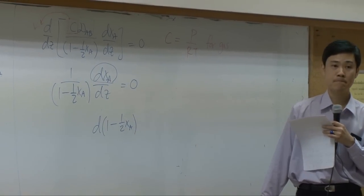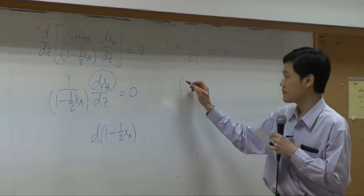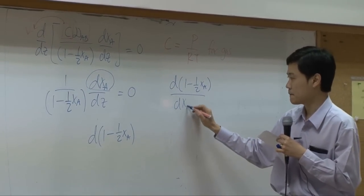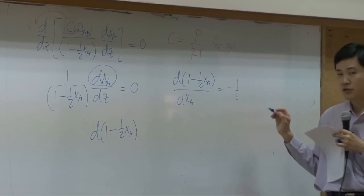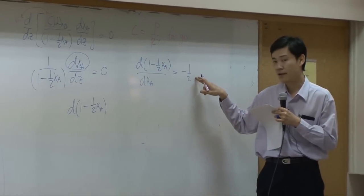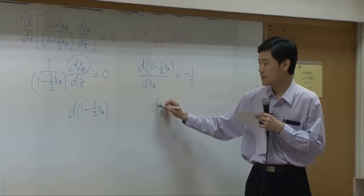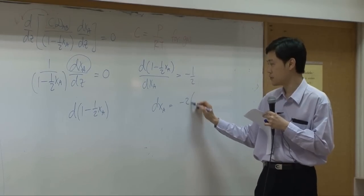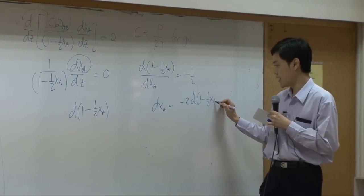You just take d of 1 minus half X_A by dX_A. Okay? Differentiation of this, you get 1 over 2 minus 1 half. Okay? So rearrange this part up here. You get dX_A equal to minus 2 d of 1 minus 1 half X_A.